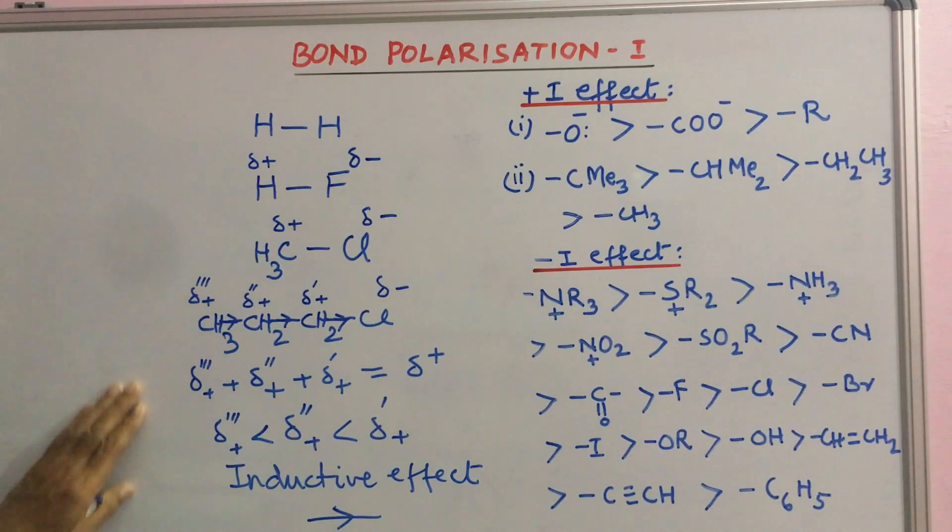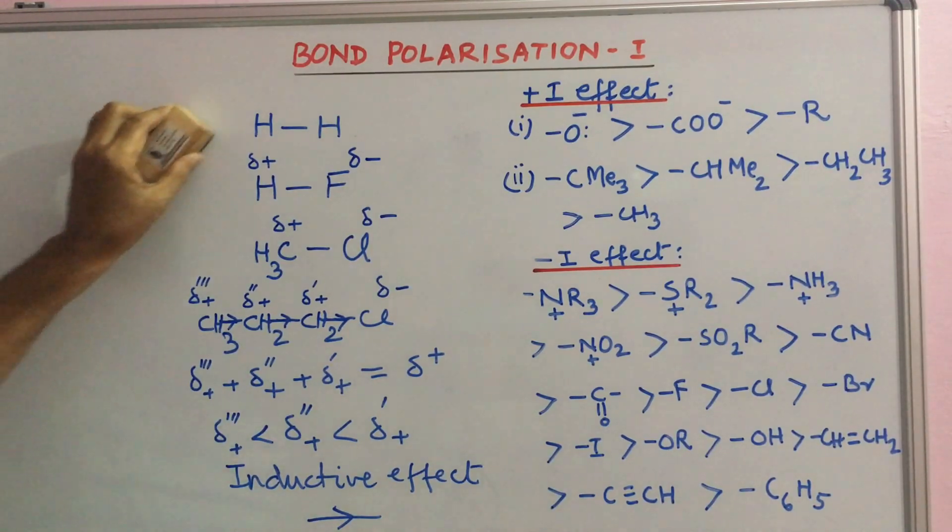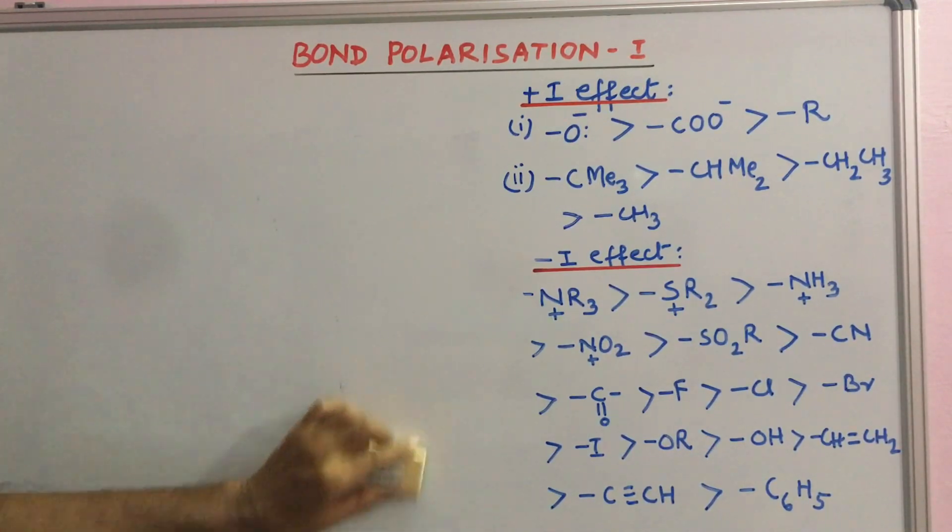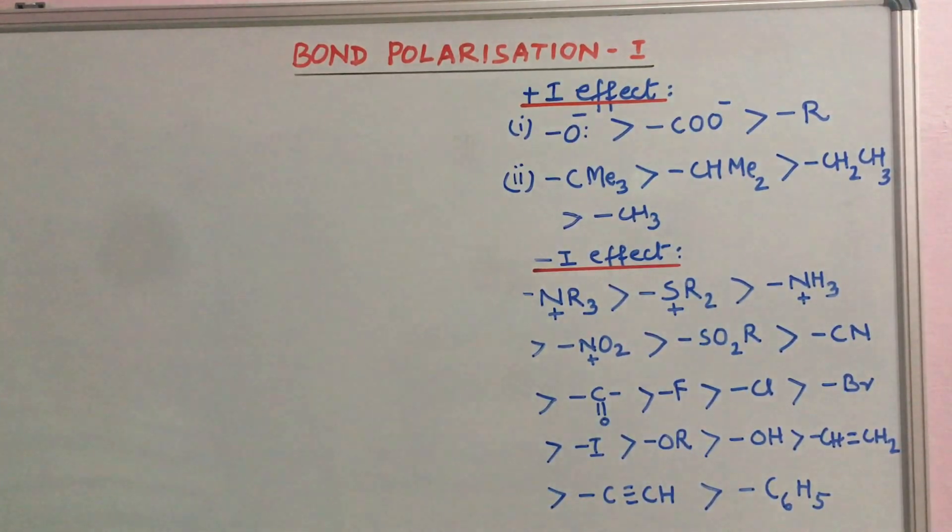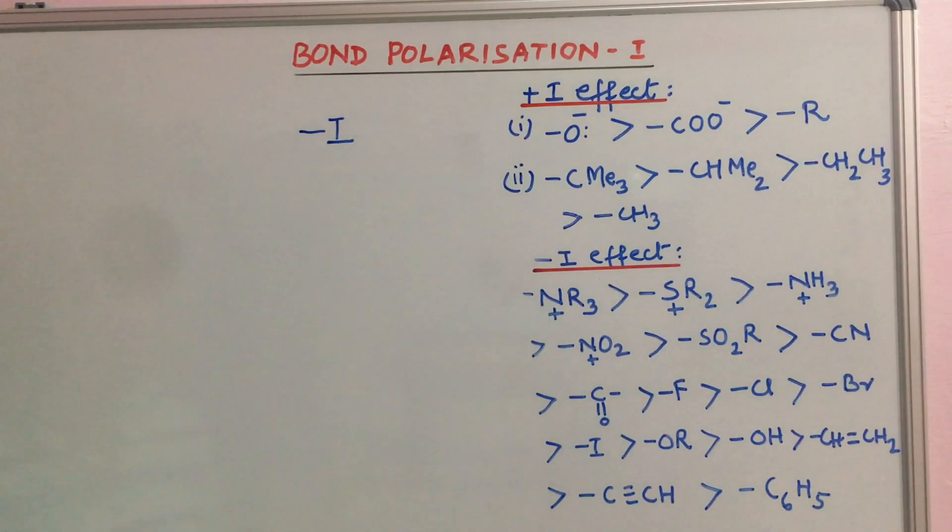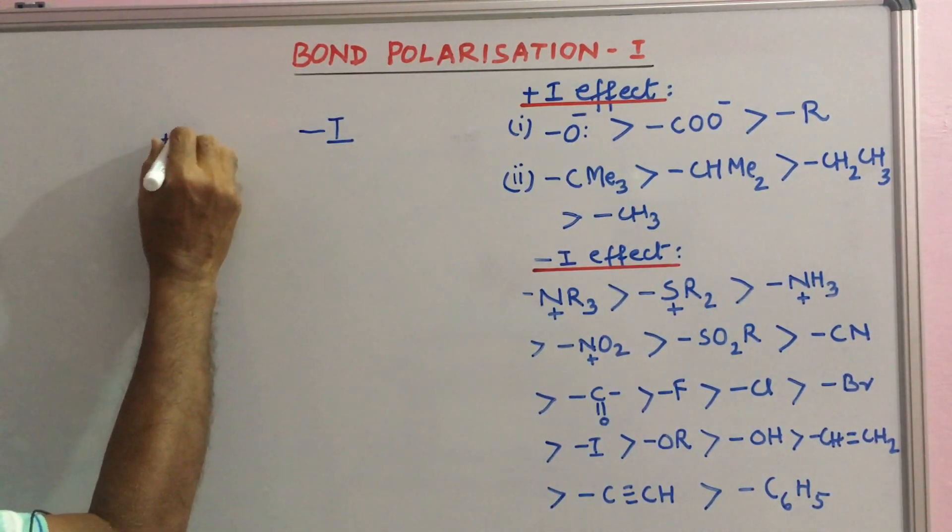Inductive effect may be either positive or negative depending upon whether the electron density is sent away from it or attracted towards it. The groups which withdraw electron are said to have minus I effect. Groups which push away electron density from themselves have plus I effect.